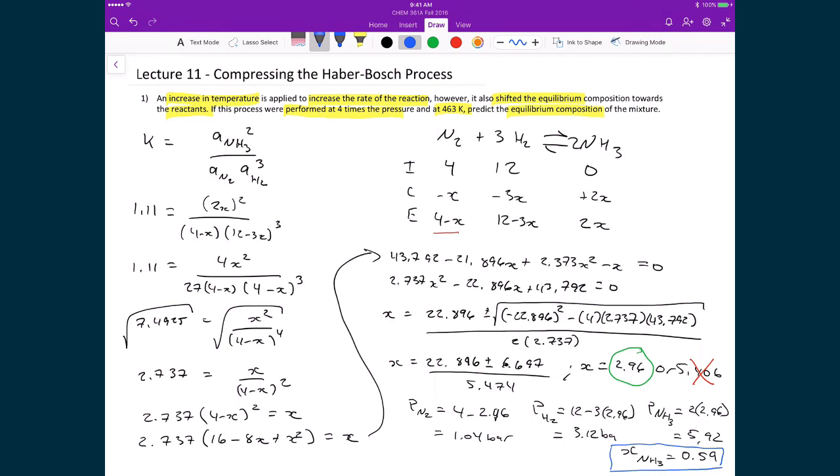Which then shifted the equilibrium back towards the reactants and we formed much less products. But then we increased the pressure a lot, and that caused a stress that would force the reaction to produce more products again. And this mirrors exactly what happens industrially.